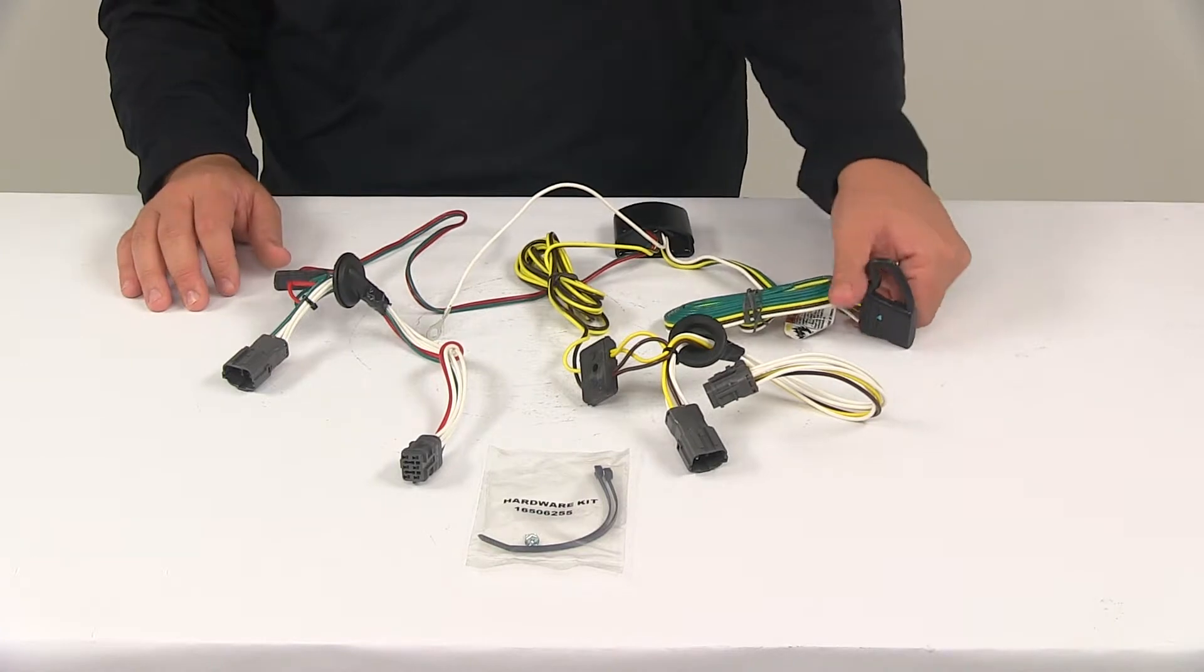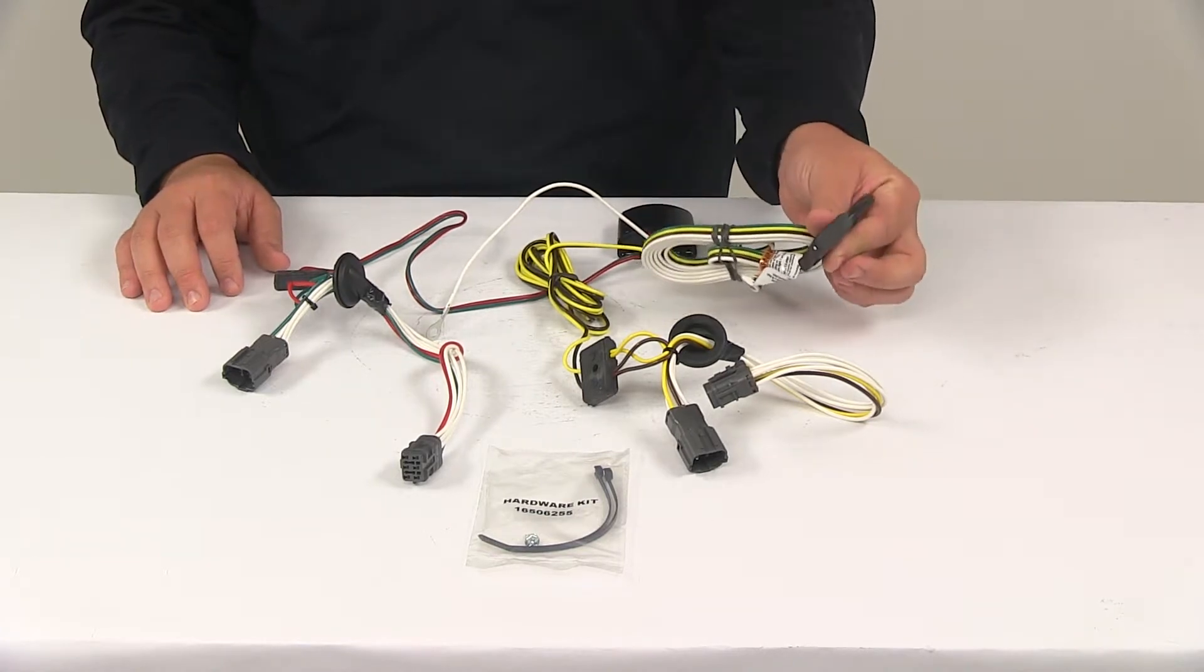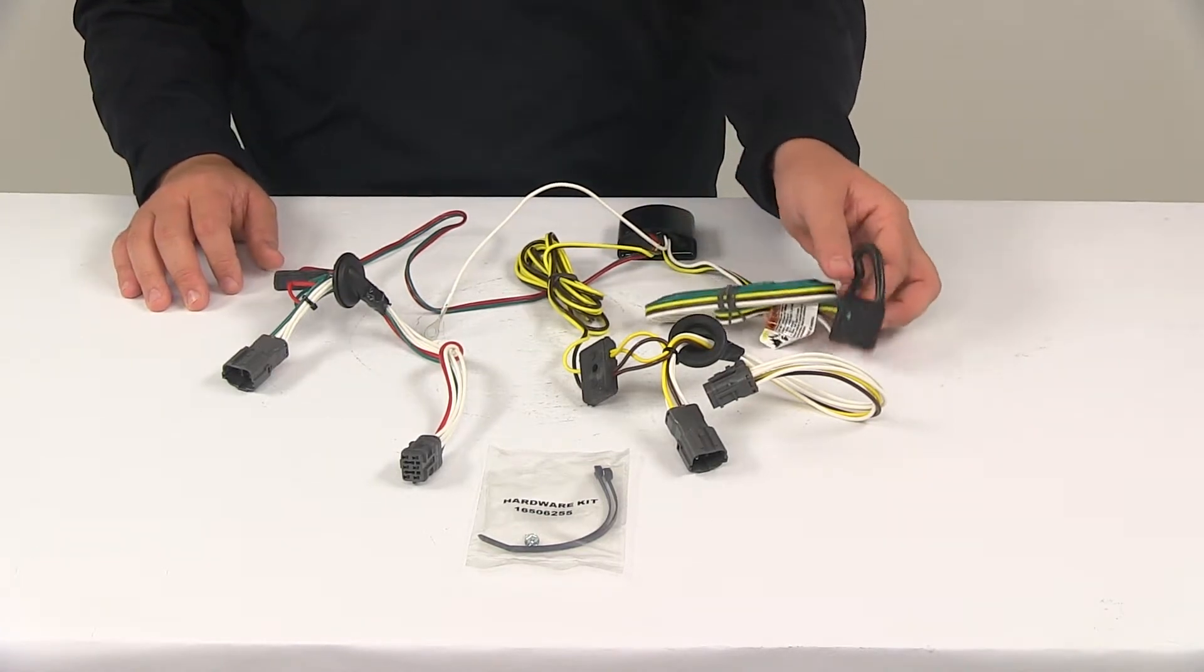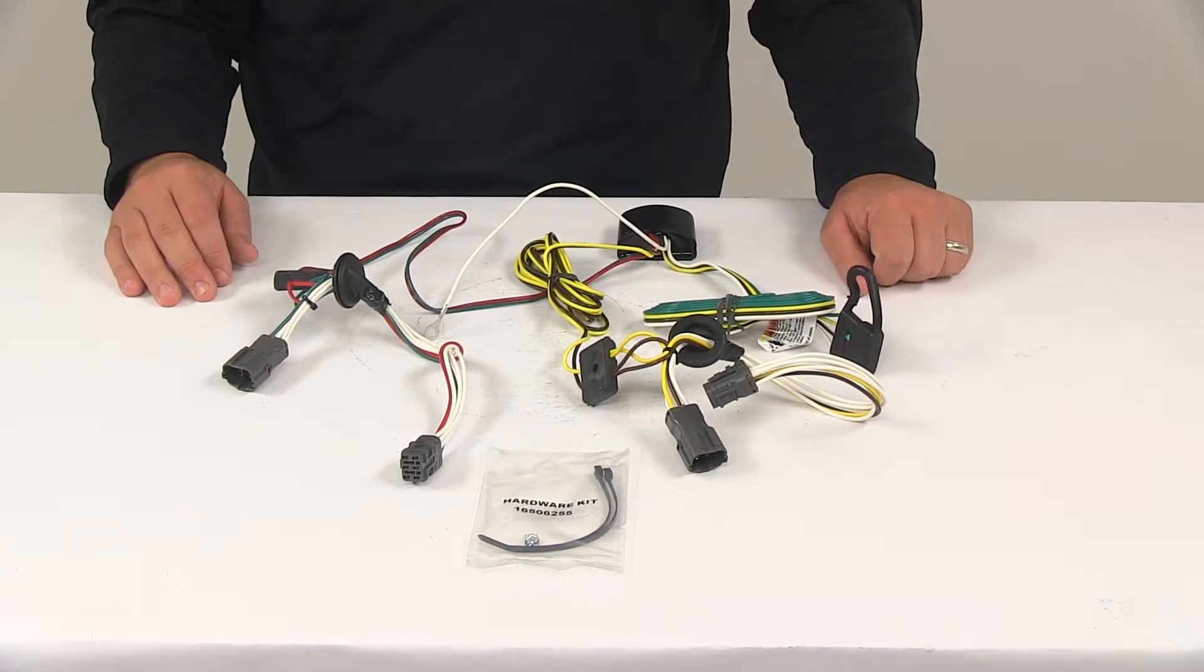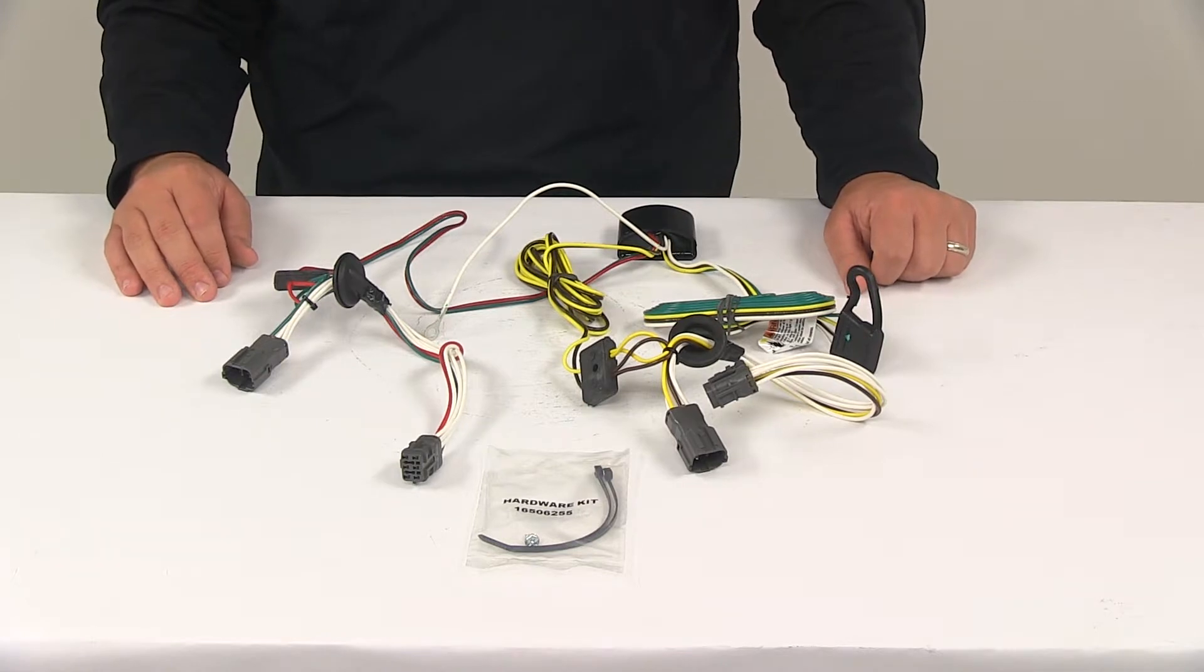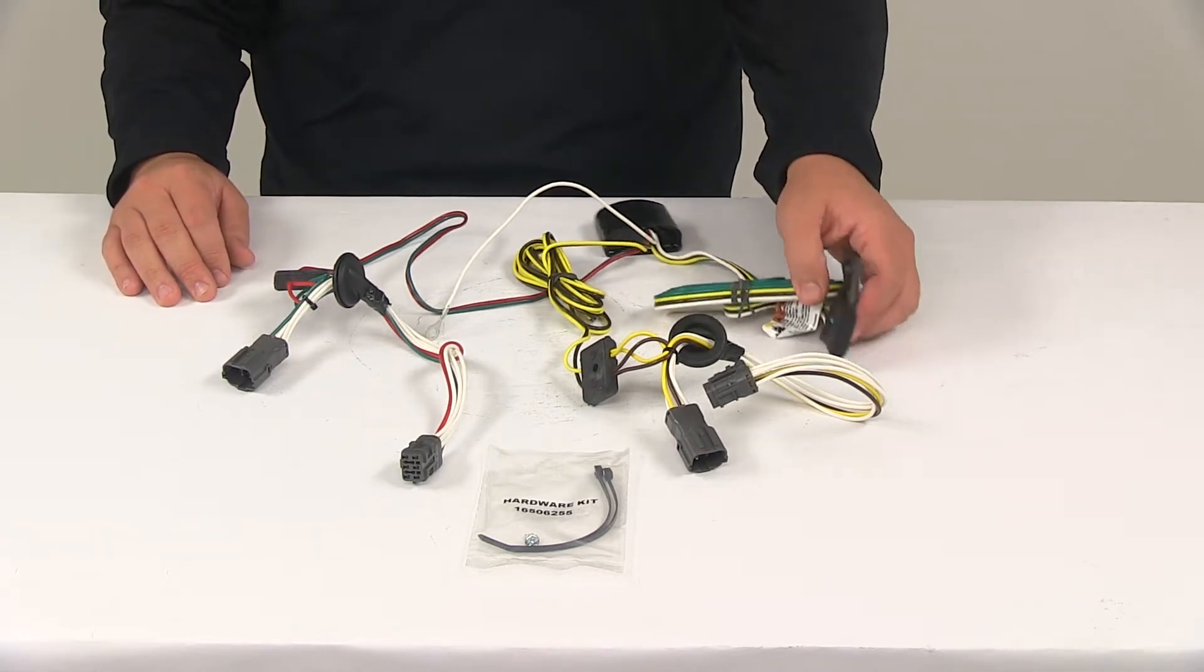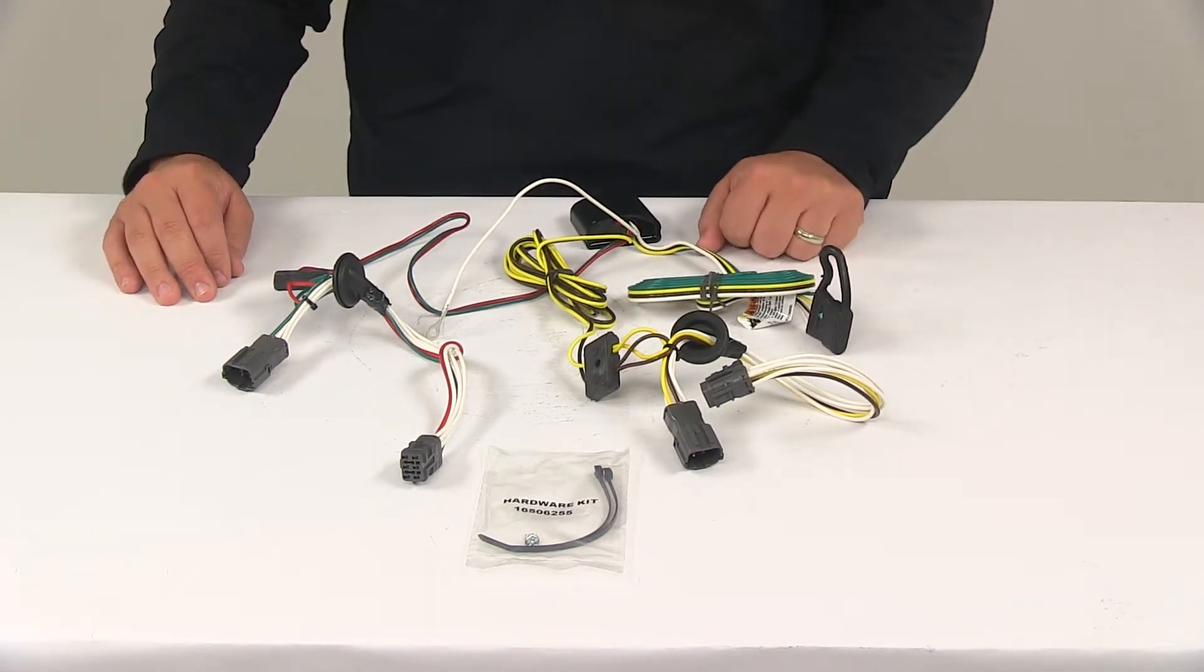Once your installation is complete, the four-way connectors are going to be stowed in the spare tire compartment of your rear cargo area. It is recommended that you use a small amount of dielectric grease in all your electrical connections, like the plugs on the vehicle and the four-pole connector itself to help prevent corrosion. The grease is sold separately, so if you need to pick some of that up, you can find it right here at eTrailer.com.